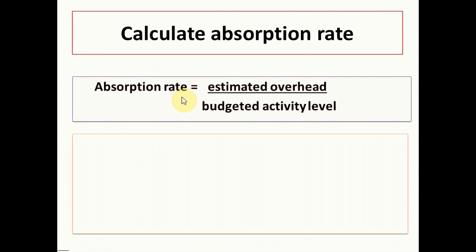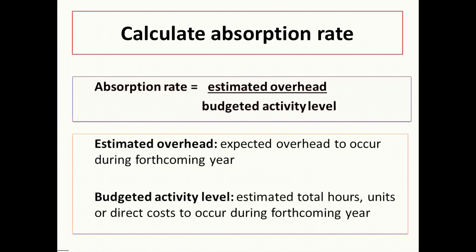Absorption rate can be calculated by dividing estimated overhead by the budgeted activity level. The estimated overhead is what the accountant estimates will occur during the upcoming year. The budgeted activity level is the estimated total hours, units, or direct costs to occur during the upcoming year.